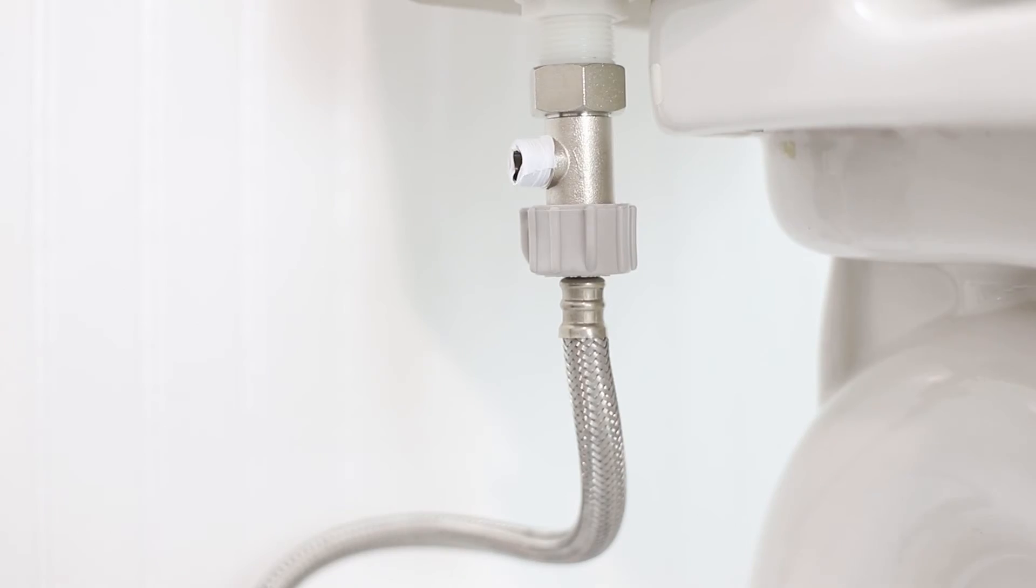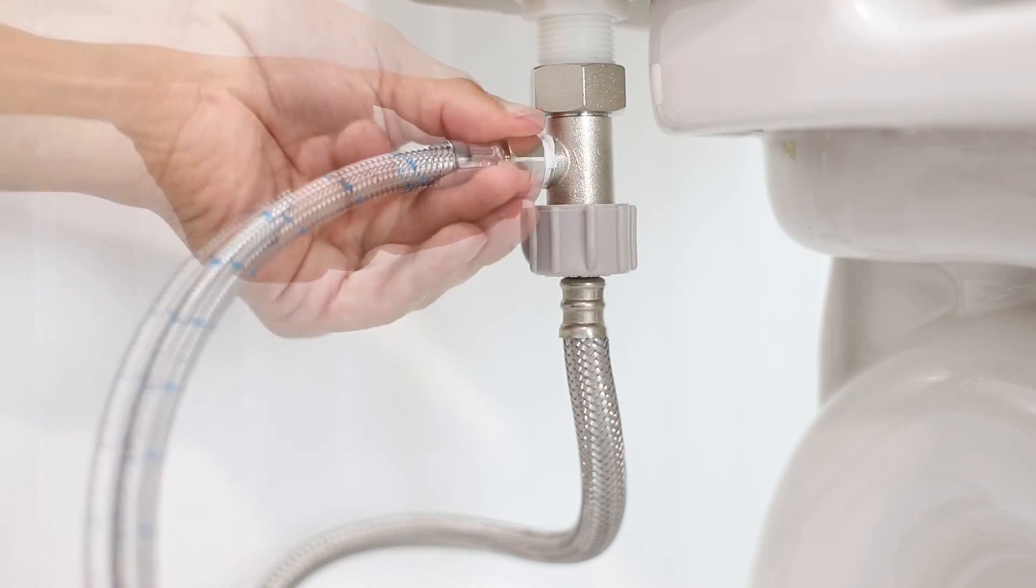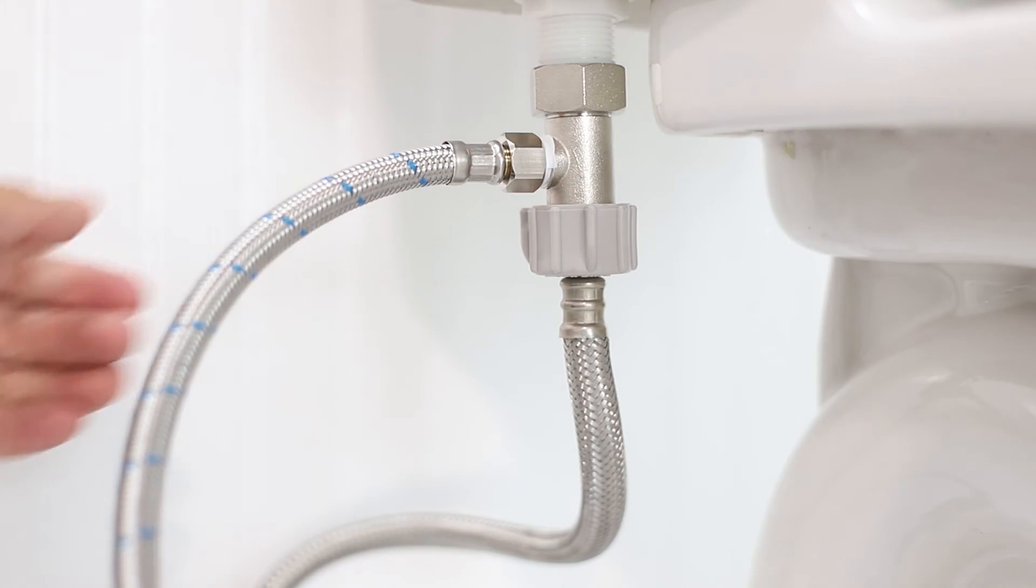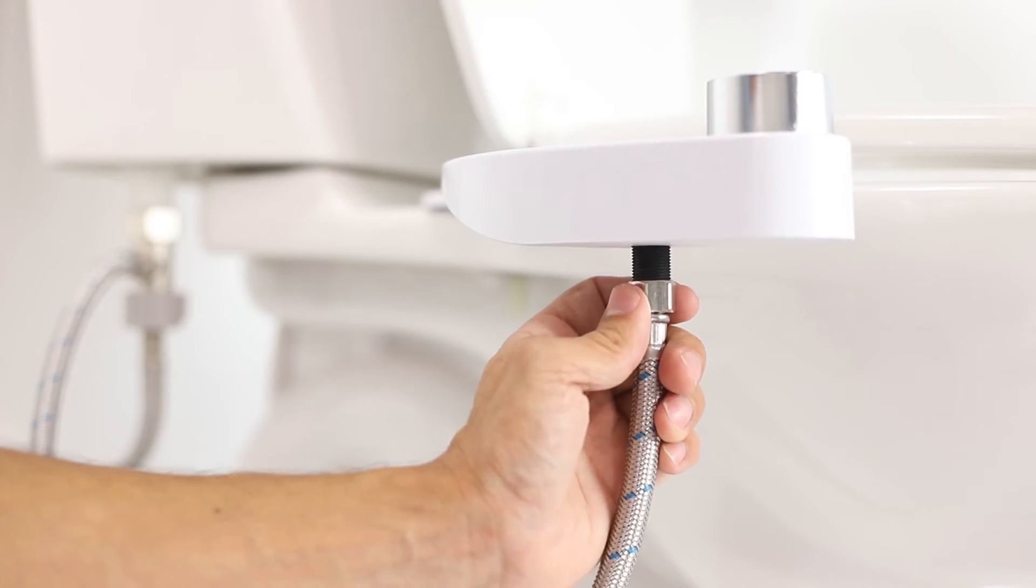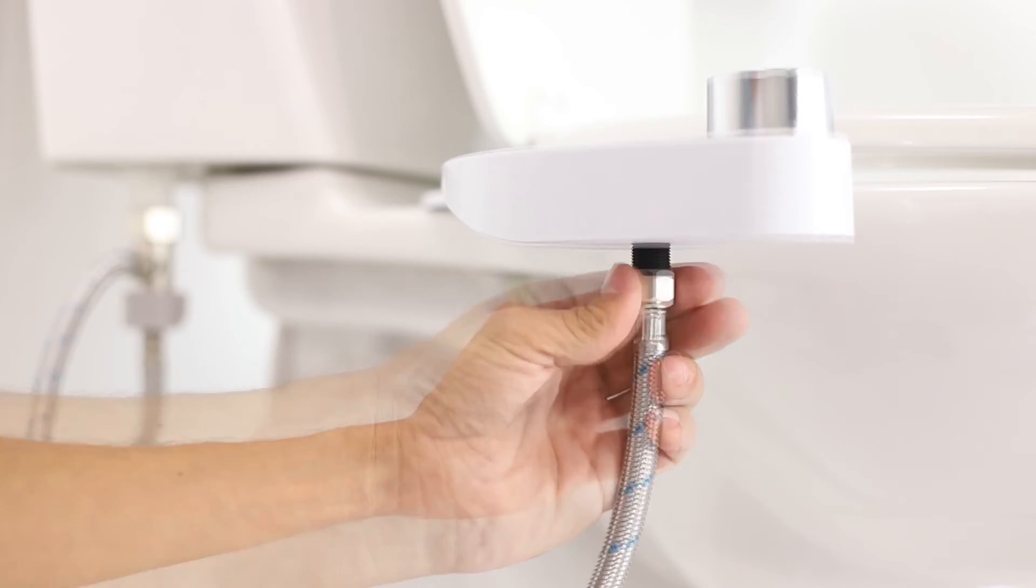Attach the braided metal bidet hose to the open side of the T-valve. Connect the open end of the bidet hose to the water inlet under the bidet attachment.